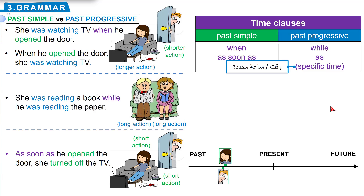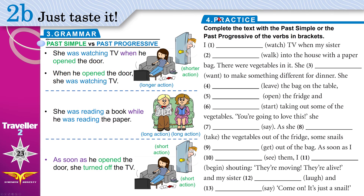Now we're ready for practice. Complete the text with the past simple or past progressive of the verbs in brackets. 'I watch TV when my sister walk into the house.' Watching TV happened first and then she walked in — that's like the long/short example. Use past progressive with 'watch' and past simple with 'walk': 'I was watching TV when my sister walked into the house with a paper bag.'